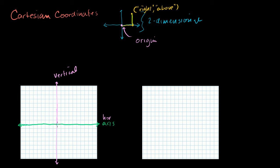We specify the origin: how far is it to the left or the right of the origin? Well, it's 0 to the right — it's right on the origin. And how far above or below the origin is it? It's 0 above or below. So the coordinate of the origin is just 0, 0.